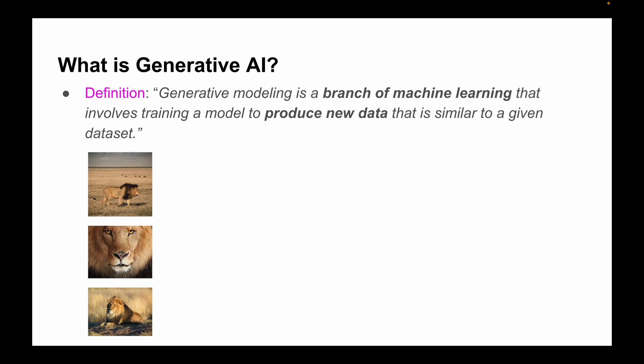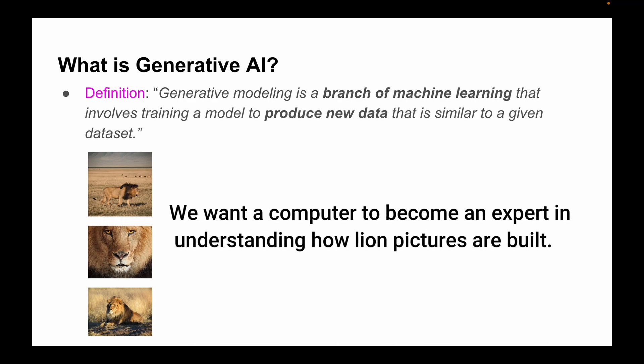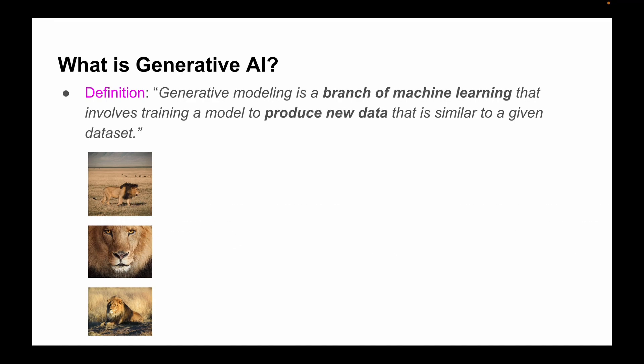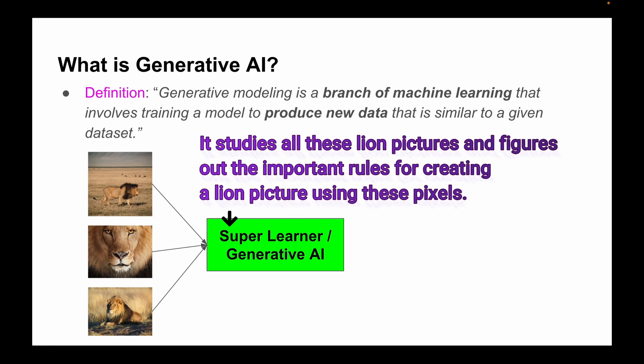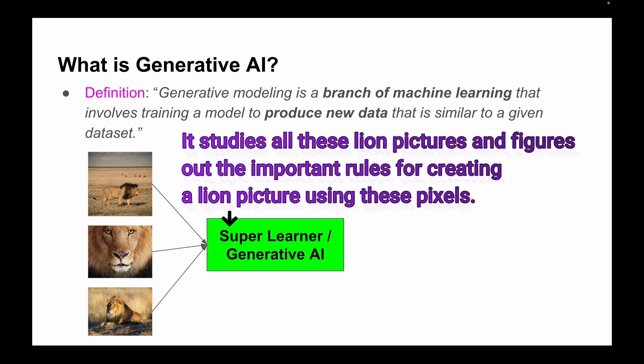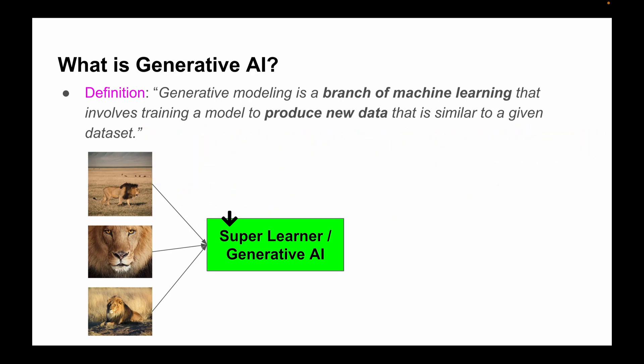We want a computer to become an expert in understanding how these lion pictures are originally built. So we use a special computer program that's like a super learner, or we call it a generative AI model. It studies all these lion pictures and figures out the important rules for creating a lion picture using these pixels.